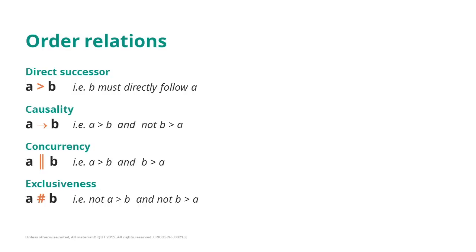Finally, there is a relationship of exclusiveness. Exclusiveness means that A has never been seen occurring together with B. That means we have never seen A being followed by B, and we have never seen B being followed by A.